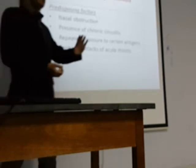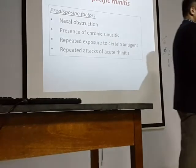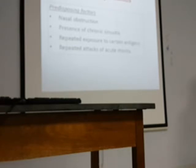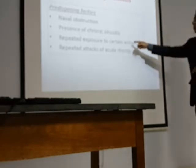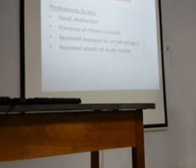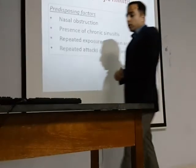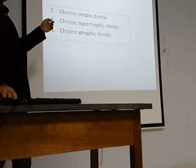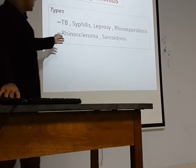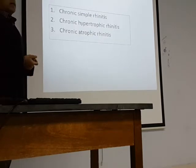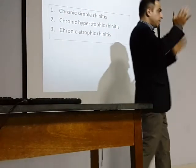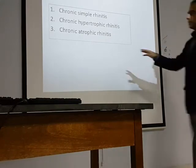Chronic non-specific rhinitis persists for a longer period. Repeated acute attacks of rhinitis again and again, or repeated attacks of sinusitis, can lead to chronic rhinitis. Exposure to certain antigens and nasal obstruction can also lead to chronic rhinitis - whenever acute inflammation is repeated it leads to chronic inflammation. Causes include specific organisms like tuberculosis, syphilis, leprosy, rhinosporidiosis, rhinoscleroma, and sarcoidosis. Types include chronic simple, hypertrophic, and atrophic rhinitis.